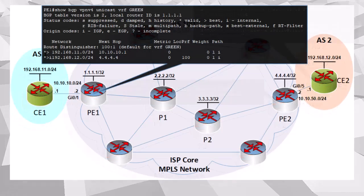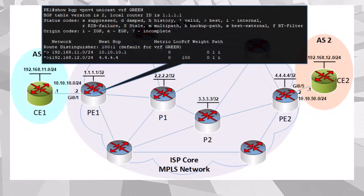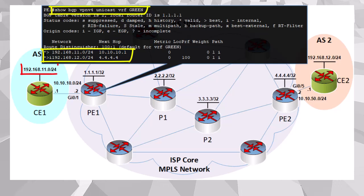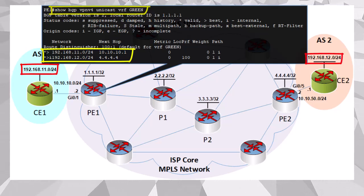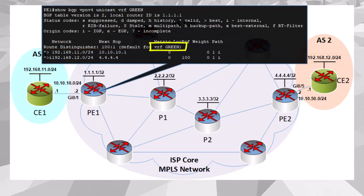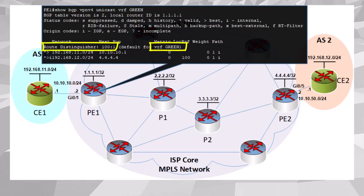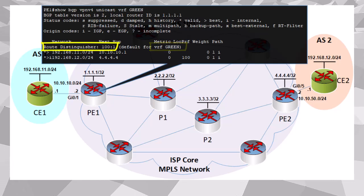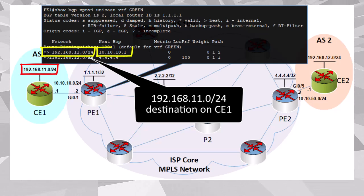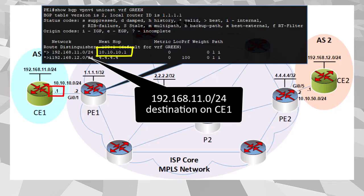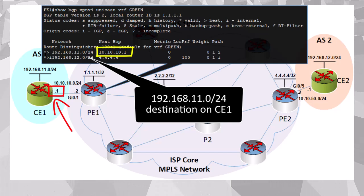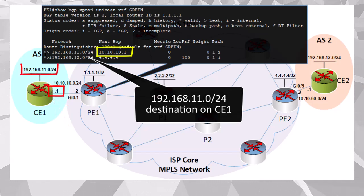Let's take a look at our VPNv4 BGP table on PE1 to see what routes we have learned. Using this command, we can see the VPNv4 routes for our VRF of green, and we see two networks. Both networks are in VRF green and are using a route distinguisher of 100:1 — that's the RD we configured on our PE routers when we configured our green VRFs. The next hop to reach this destination is the IP address of the CE1 router. So PE1 now knows, using a VPNv4 route, how to get to our customer network on CE1, and it can advertise this information using multi-protocol BGP.